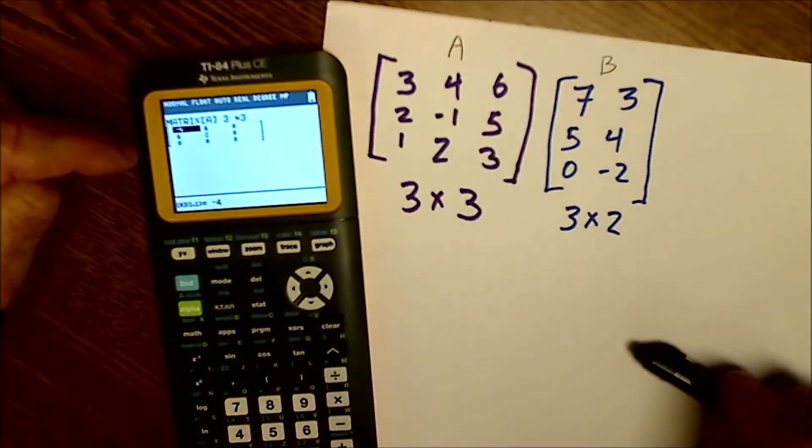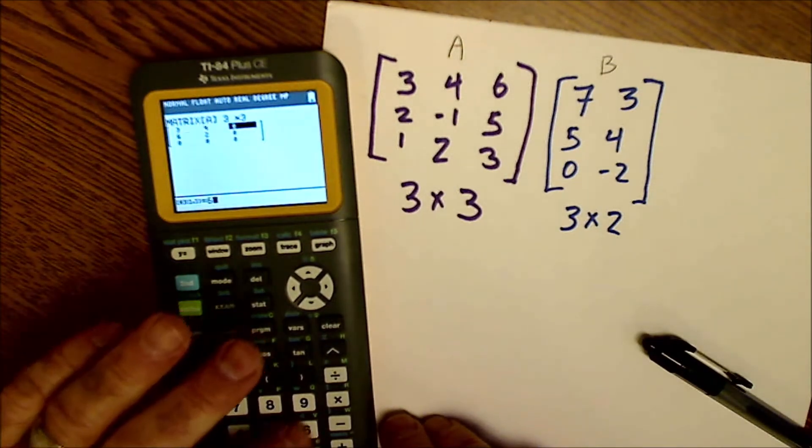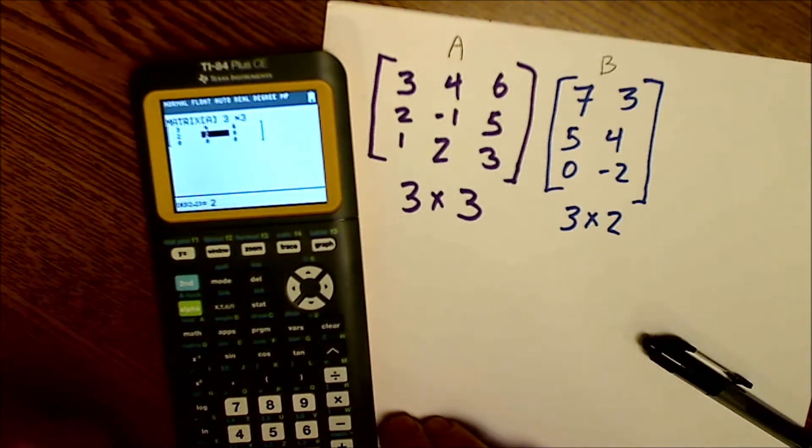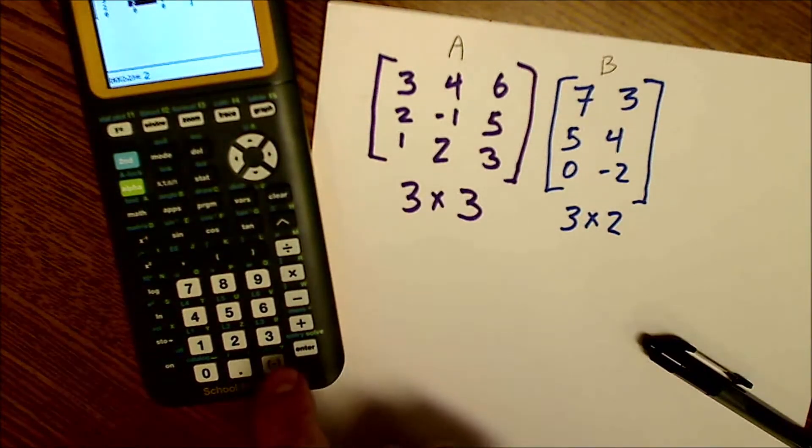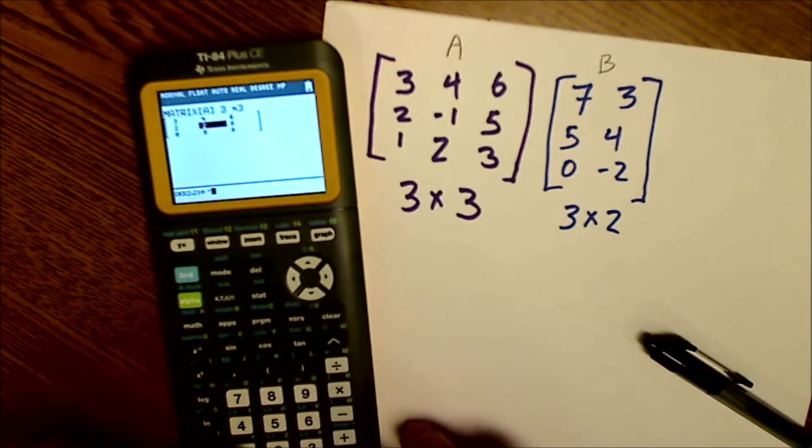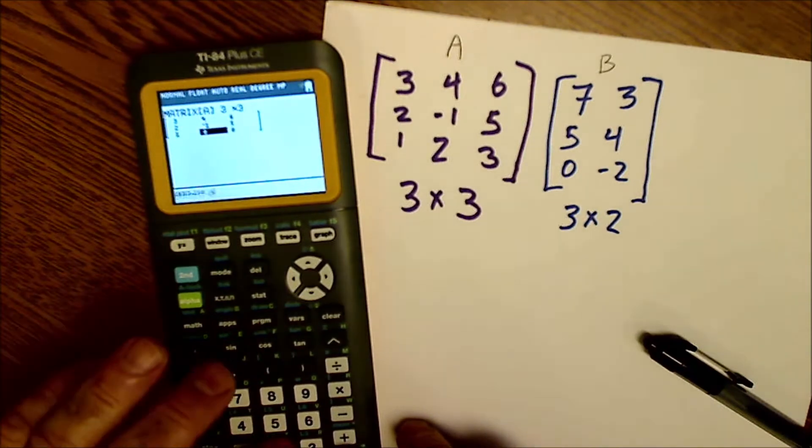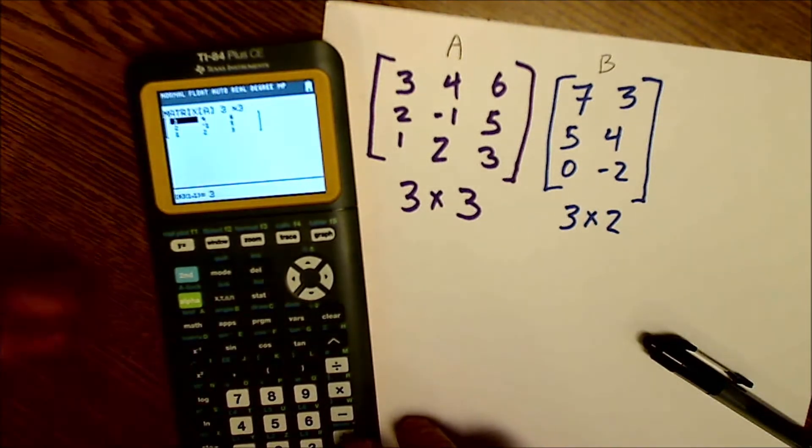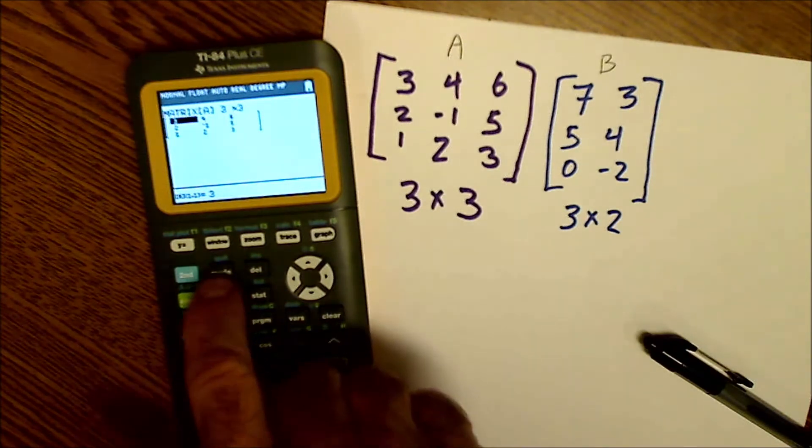Then I enter my values there: three, four, six, two. When I enter my negative one, use the negative key down here, not the subtraction key. So negative one, five, one, two, three. So I'm all done creating matrix A. I'm going to go up here to quit, right above there. So second quit.